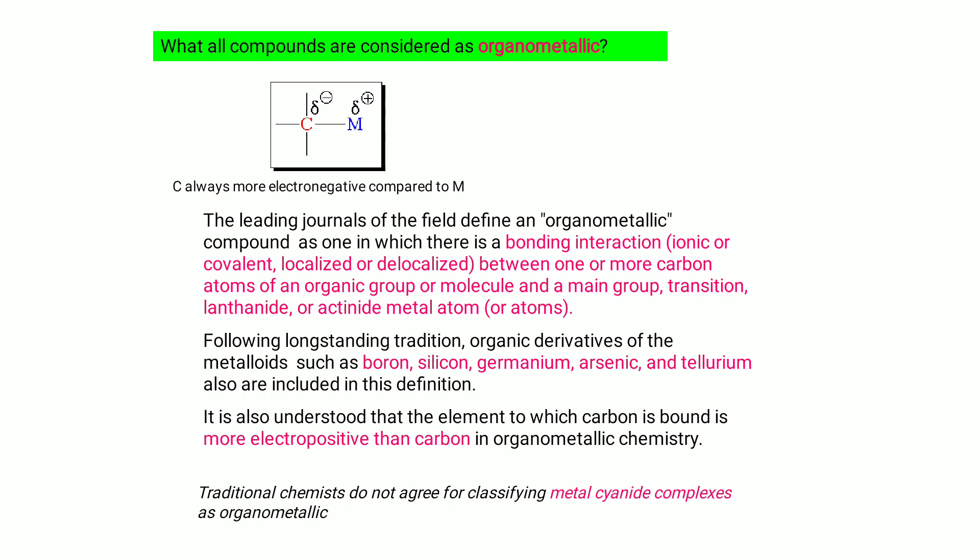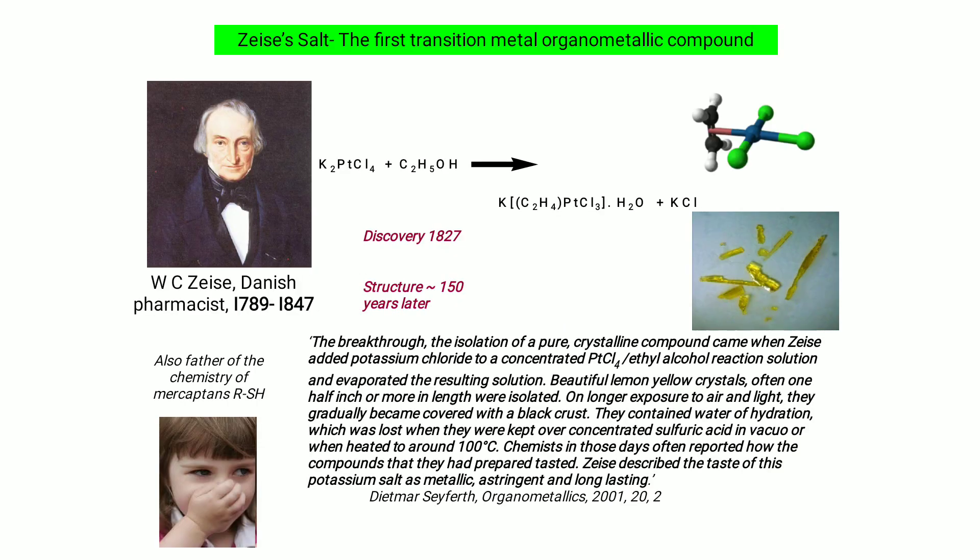Following long-standing tradition, organic derivatives of metalloids such as boron, silicon, germanium, arsenic, and tellurium are also included in this definition. It is understood that the element to which carbon is bound is more electropositive than carbon. Traditional chemists do not classify metal cyanide complexes as organometallic compounds.